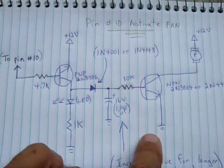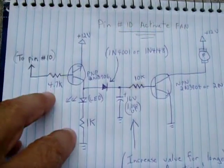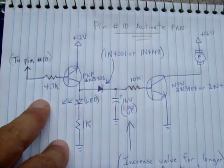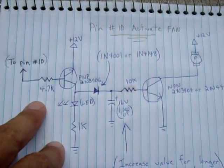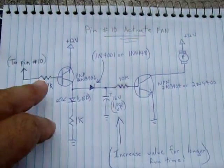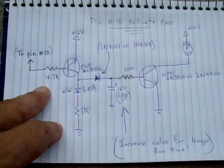Somebody had a request on how to activate a small fan on my LM3914 temperature indicator circuit. So I put this schematic together to show how to do that.